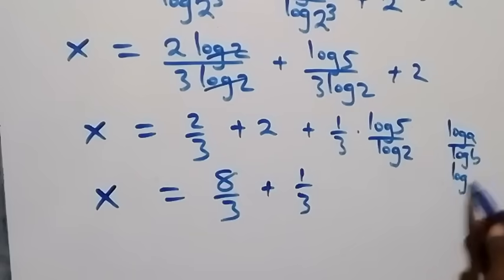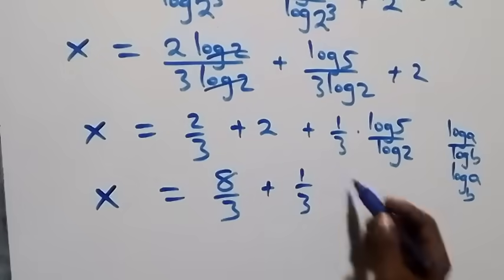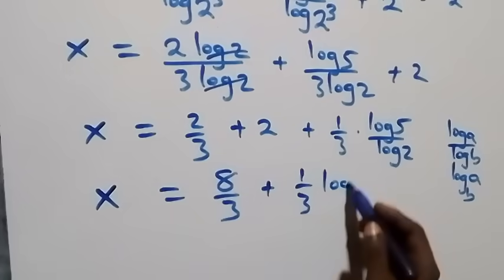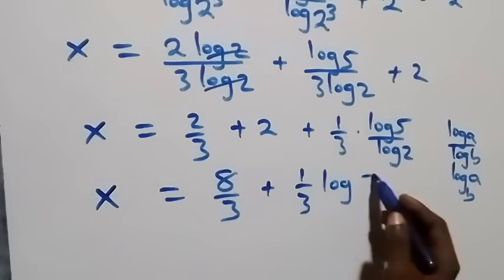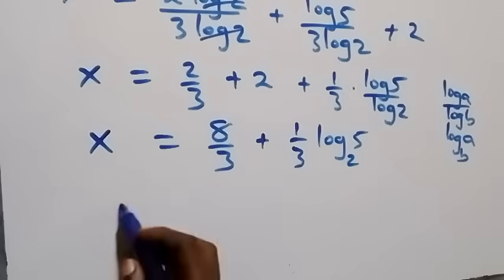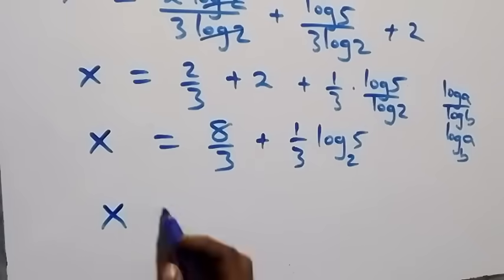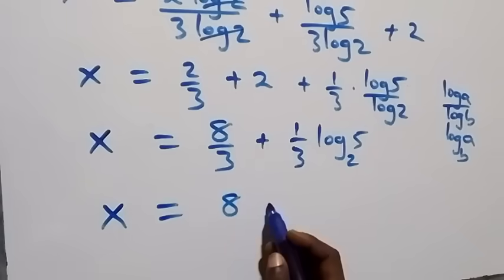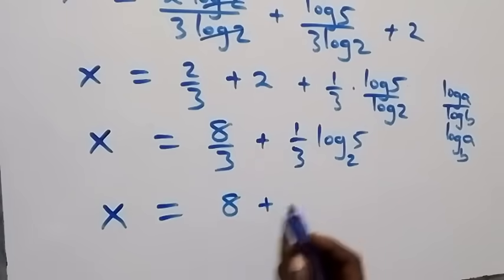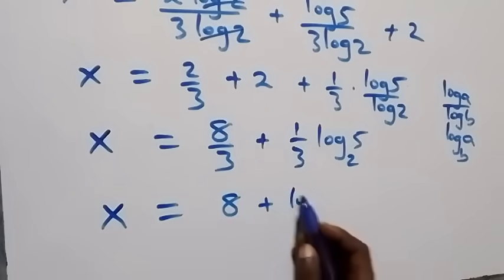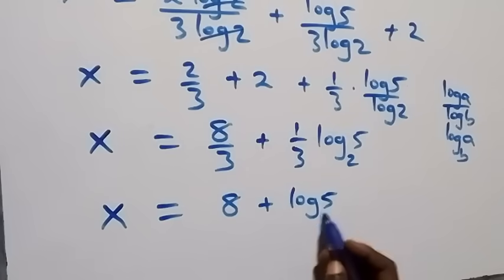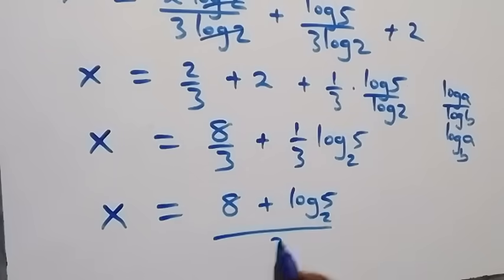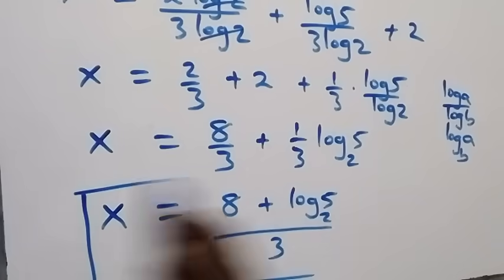Using change of base, we can write log a over log b as log a to base b. So here we have log 5 to base 2. Therefore x equals 8 plus log 5 base 2, all over 3.